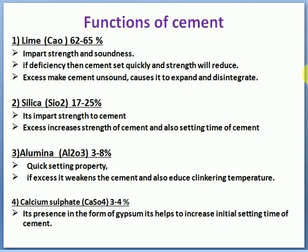Lime (CaO), 62 to 65% — its function is to provide strength and soundness to cement. If lime is less, then cement sets quickly and strength will reduce. If lime is excess, the cement will expand and disintegrate. So: less lime → quick set and reduced strength; excess lime → expansion and disintegration. This is an important point.